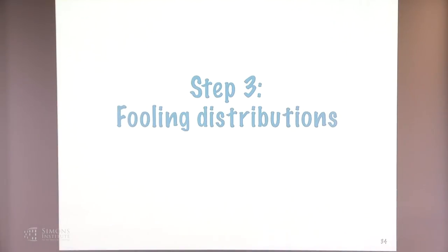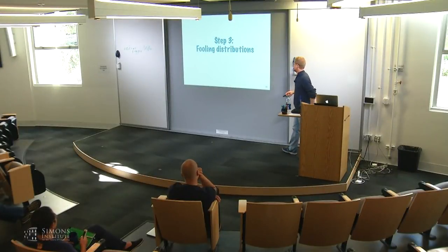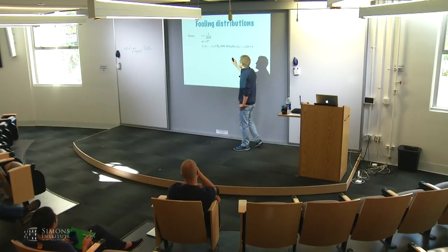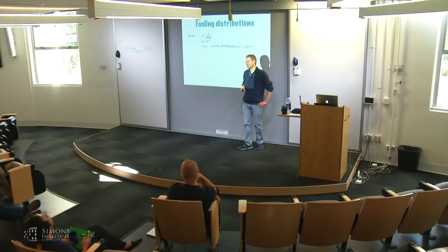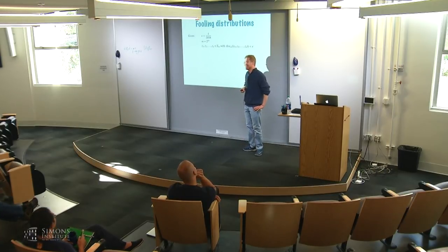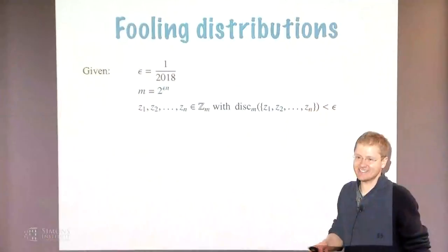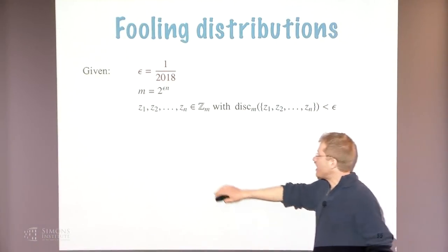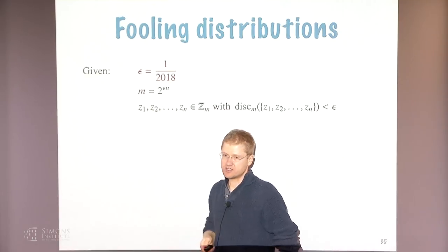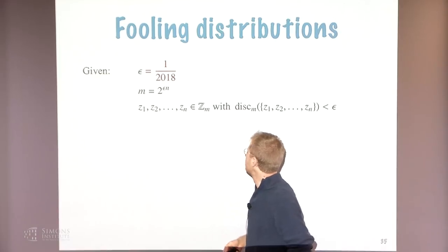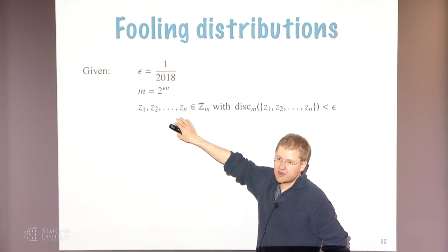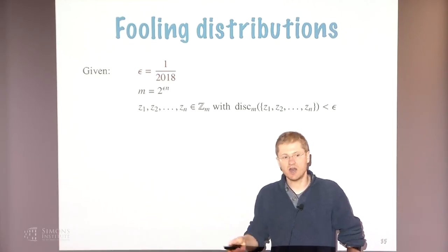The technical statement: the probability of getting a specific value modulo m differs from 1/m by an exponentially small amount, where the base is the discrepancy parameter. If discrepancy is 1 (trivial, highly periodic construction), the difference can be as large as 1 — you get nothing. So anything bounded away from 1 works. Step three: set epsilon to be sufficiently small — the modulus is 2 to some constant times n — and the z_i's are elements of the aperiodic set.